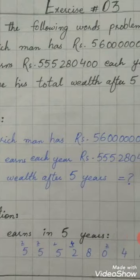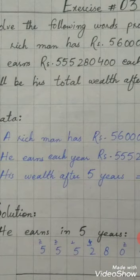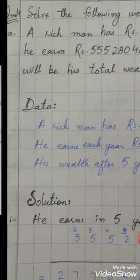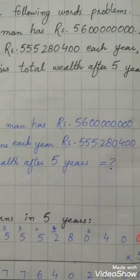A rich man has rupees five billion six thousand million. If he earned rupees five hundred fifty five million two hundred and eighty thousand four hundred each year, what will be his total wealth after five years? Now we have the data.